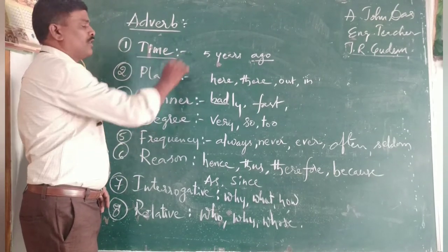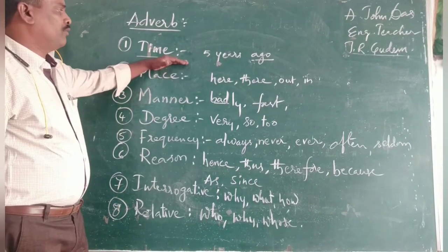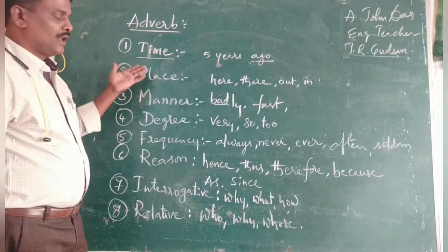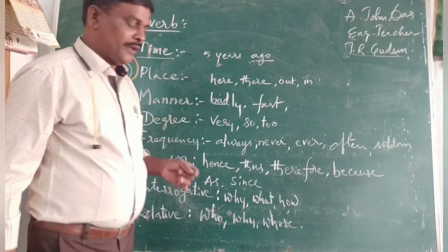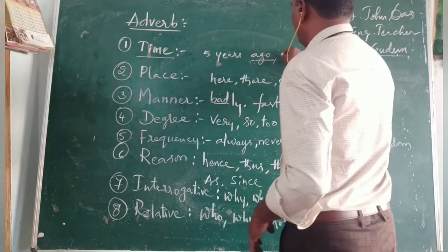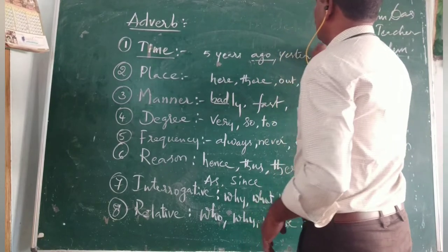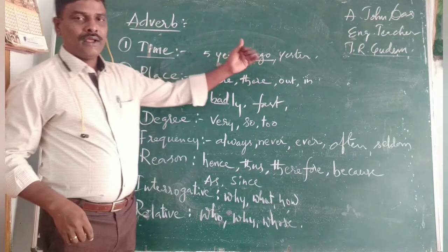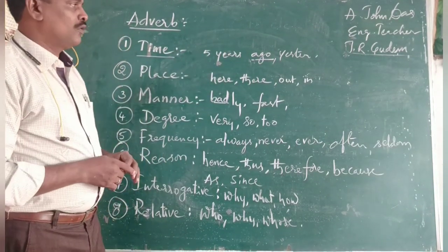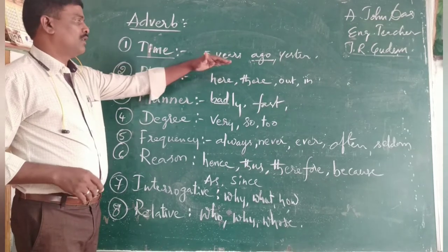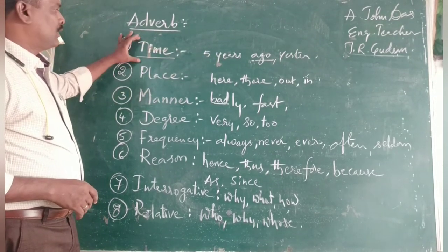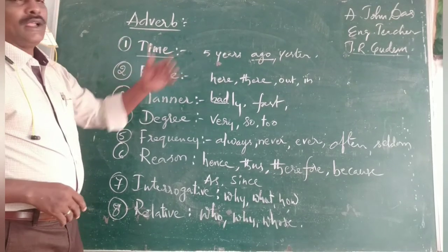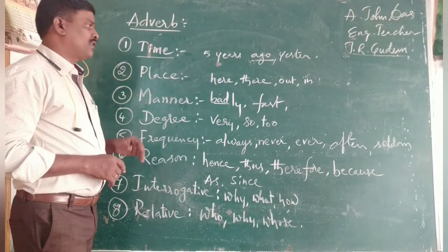Adverb is of eight kinds. The first one is adverbs of time. Examples of adverbs of time include: yesterday, today, three years ago, tomorrow, and so on. These are the words used for adverbs of time, used at the end of a sentence or in the middle of a sentence.